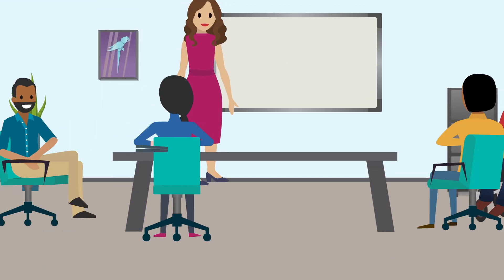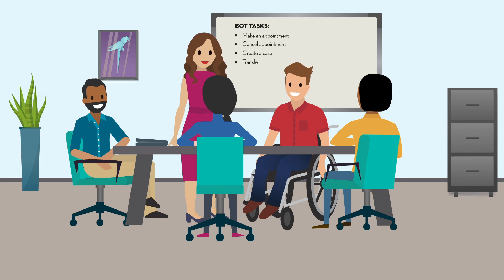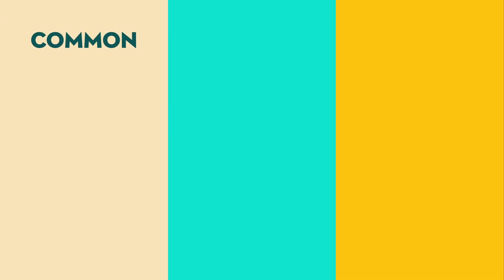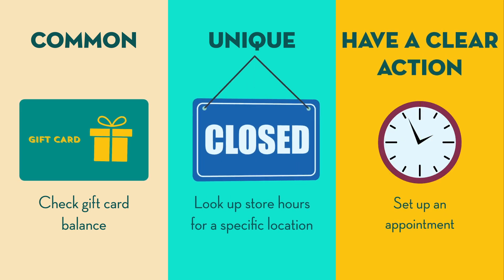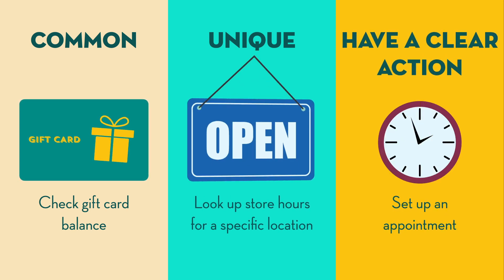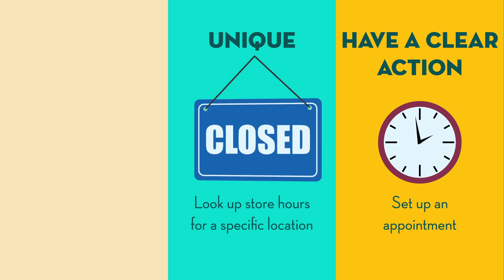To choose the intents to include in your model, identify the tasks that you want the bot to handle. What are the main reasons that customers reach out to your agents? Characteristics of good intents are tasks that are common, unique, and have a clear action or information that the bot can provide. We recommend that you pick three to five unique tasks and describe them starting with a verb.